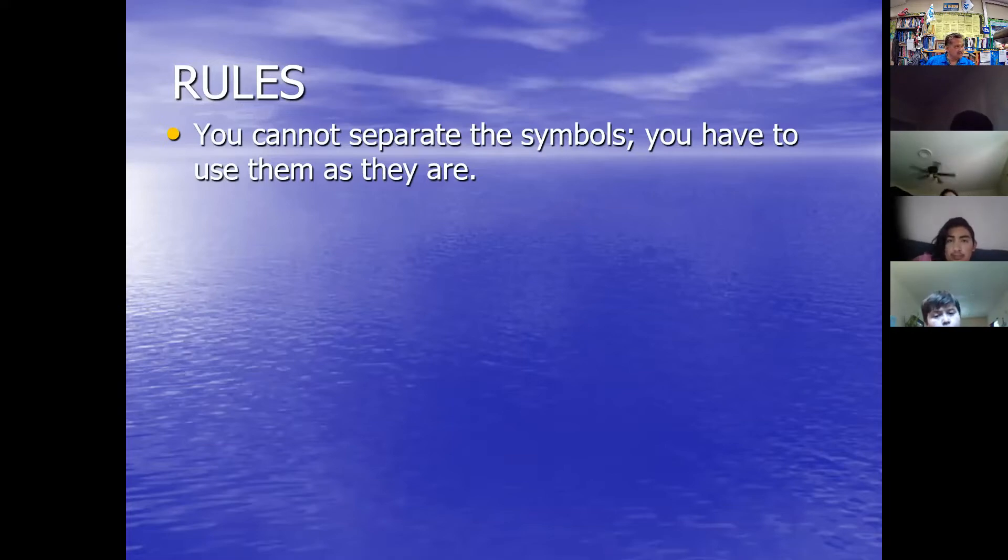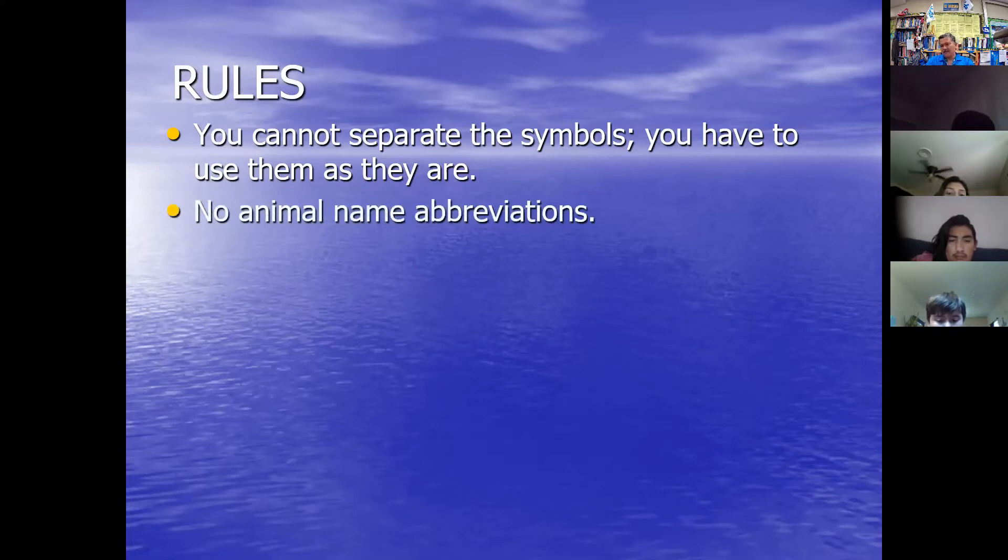Like if you have a cesium, that's a C and an S, you need Cs. Not like you can split it and slip an E in there. No, you have to use the symbols the way they are in the periodic table of elements. Do not use animal name abbreviations like hippo or rhino. But if you can spell out hippopotamus or rhinoceros, then you can use those.